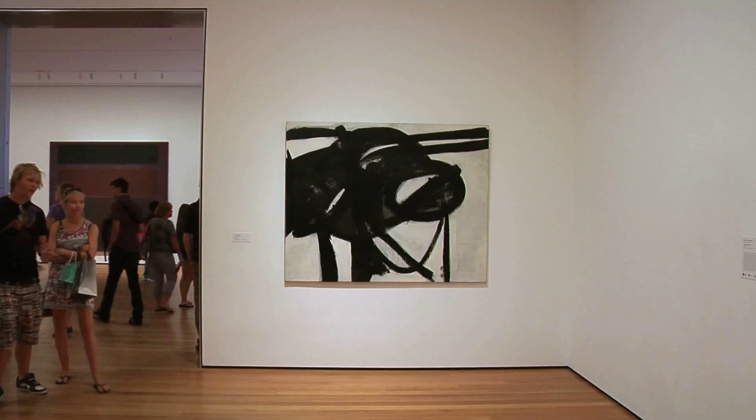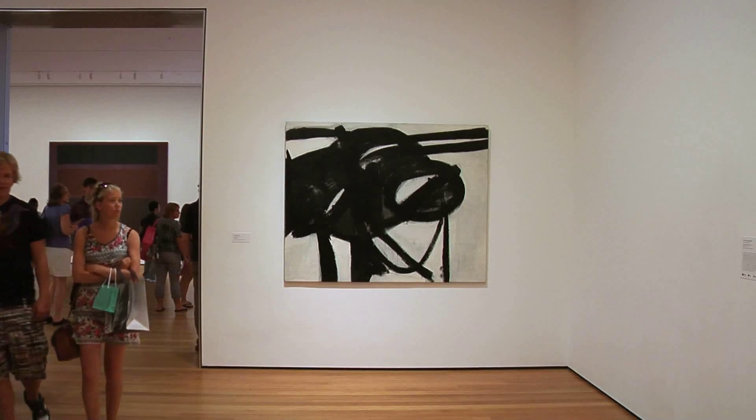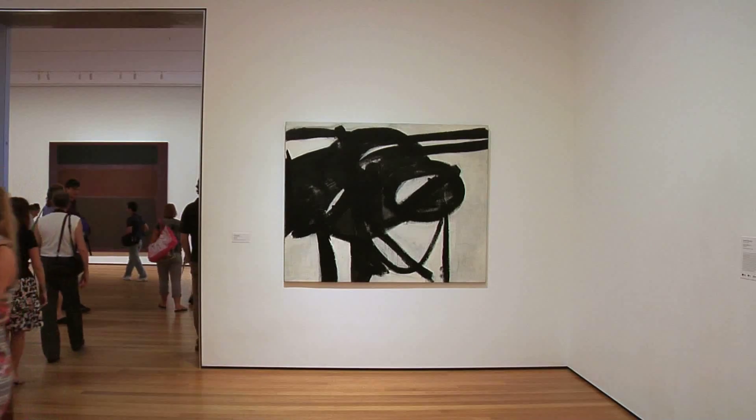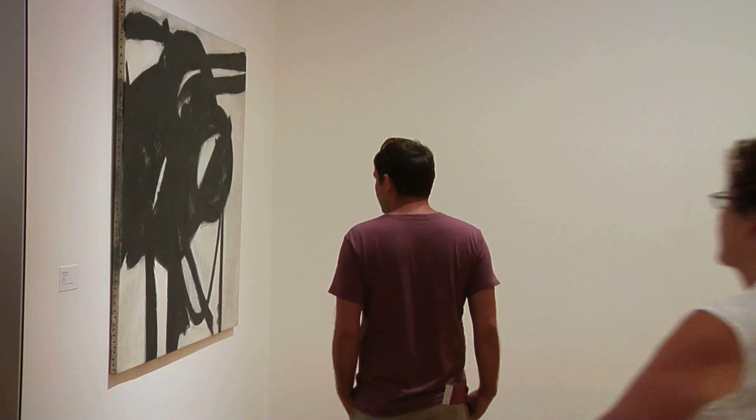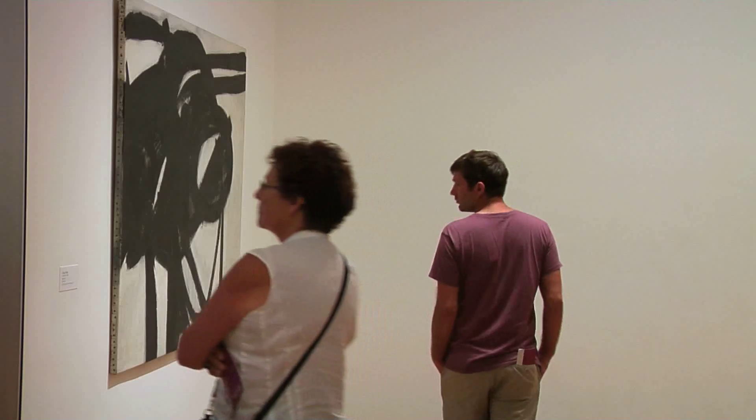Well, around that time, Kline visited his friend Willem de Kooning. Now, de Kooning invited Kline over to show him a new toy, a projector, something that could enlarge a drawing or photograph many, many times up to the scale of, say, a wall.